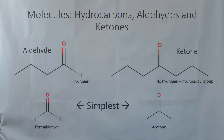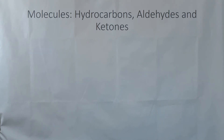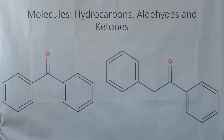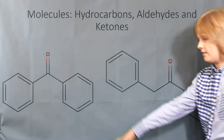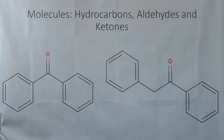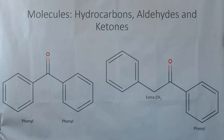These two are the simplest aldehydes and ketones. We've got formaldehyde and acetone. I've got two molecules here, both containing benzene molecules. You can see here that I've got benzene molecules directly attached to the carbonyl, which makes them phenyl groups. Whereas the other one has a phenyl, but with an extra CH2 group in the way, which makes the other benzene molecule a benzyl group.